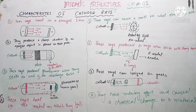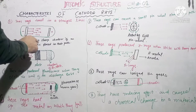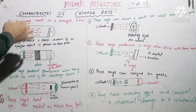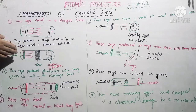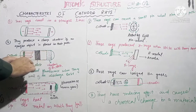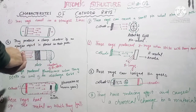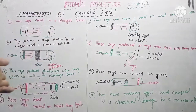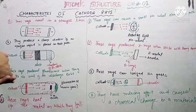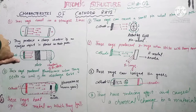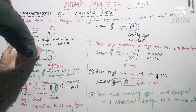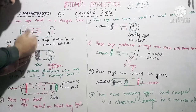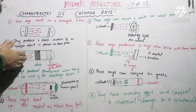The second characteristic is that cathode rays produce a sharp shadow if an opaque object is placed in their path. You can see on this graph that the cathode rays are traveling straight, and the opaque object is placed in their path, producing a shadow.